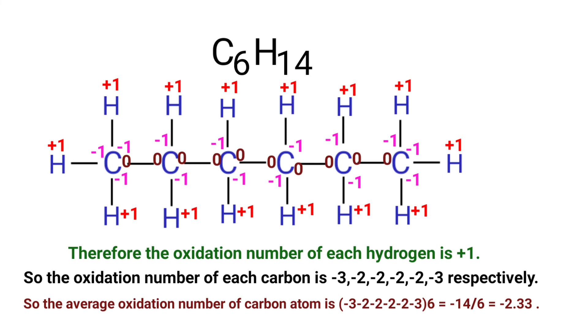Therefore, the average oxidation number of the carbon atoms is (-3 + -2 + -2 + -2 + -2 + -3) divided by 6, which equals -14/6, that is equal to -2.33.